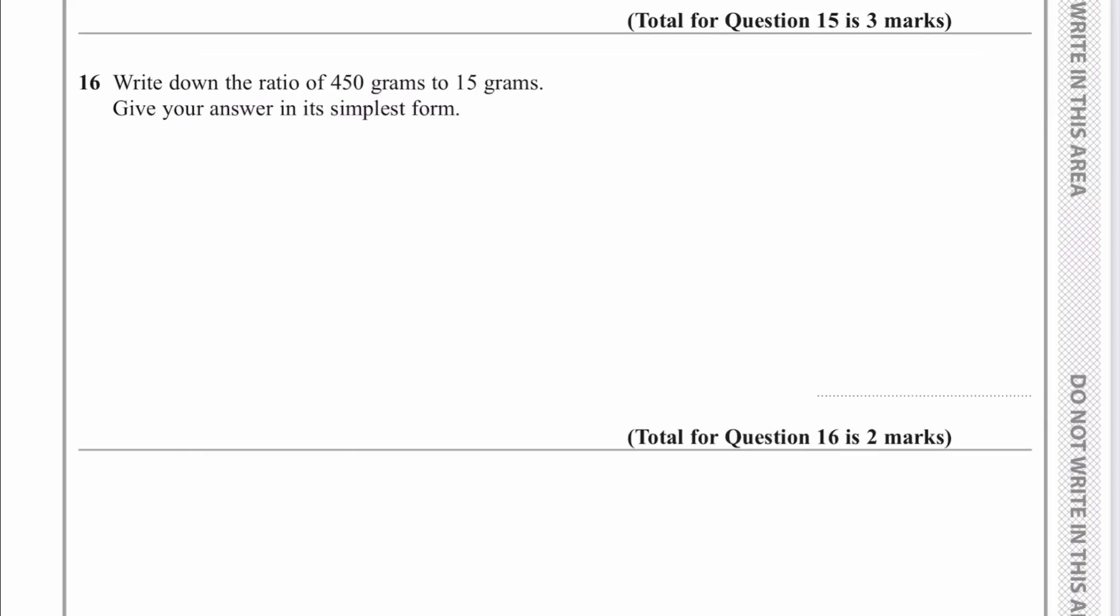So here we are at question number 16. It says, write down the ratio of 450 grams to 15 grams in its simplest form. So really what we've got is 450 to 15, and we're looking at making that as small as we possibly can. If I divide the right-hand side by 15, that's going to equal 1. If I divide this side by 15, that's going to equal 30. Therefore, the simplest form of this particular ratio is going to be 30 to 1.